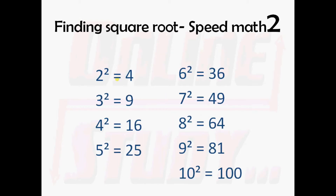Let's make some important points. 2 square is equal to 4 and 4 is unit digit. 3 square is 9 and unit digit is also 9. 4 square equal to 16 and 6 is unit digit. 5 square equal to 25 and 5 is unit digit. 6 square equal to 36 and again 6 is unit digit. 7 square equal to 49 and 9 is unit digit. 8 square equal to 64, 4 is unit digit. 9 square is 81, 1 is unit digit. 10 square equal to 100 and 0 is unit digit.